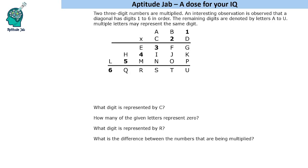Hello everyone, welcome to Aptitude Jab. This is a set based on cryptarithmetic. It says there is one two-digit number and two three-digit numbers being multiplied. There is an observation that the diagonal is 1, 2, 3, 4, 5, 6. All these are letters that denote digits. Multiple letters may represent the same digit. The digits are only from zero to nine, so obviously the same digit can be represented by multiple letters. We have to find this multiplication and answer questions about the product.